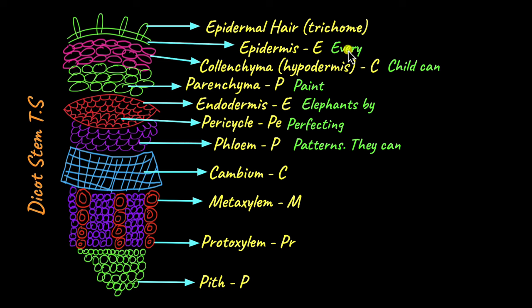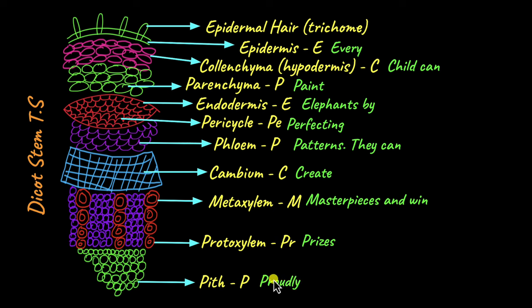The sentence goes: 'Every child can paint elephants by perfecting patterns. They can create masterpieces and win prizes proudly.' This is the mnemonic I came up with to remember the different parts of a dicot stem. You can come up with your own mnemonic with your own words to remember the different parts of the dicot stem.